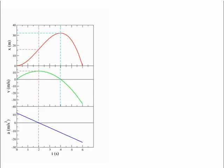The derivative of a function measures the gradient of the curve. So the gradient of the x-t curve gives the value of the velocity at any instant, and the gradient of the velocity-time curve gives the value of the acceleration at any instant. Notice when the acceleration is equal to zero at t equals two seconds, therefore dv/dt is equal to zero when t equals two seconds, and therefore the gradient of the velocity-time curve must be zero at t equals two.